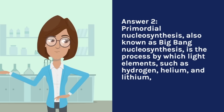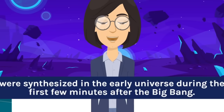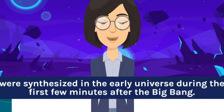Primordial nucleosynthesis, also known as Big Bang nucleosynthesis, is a process by which light elements such as hydrogen were synthesized in the early universe during the first few minutes after the Big Bang.